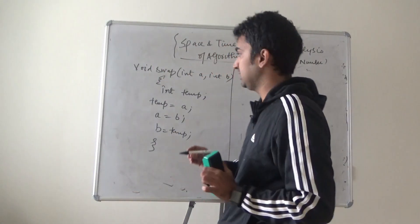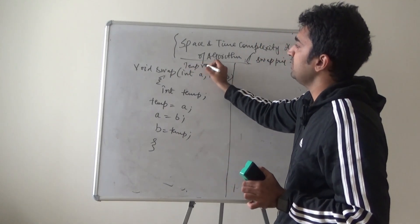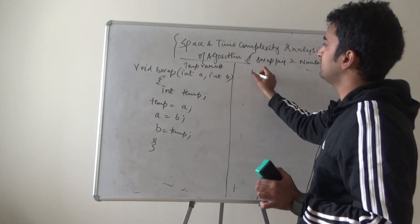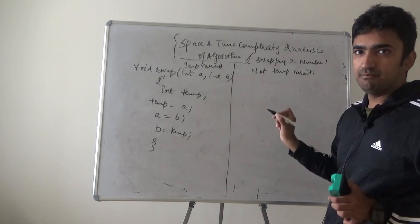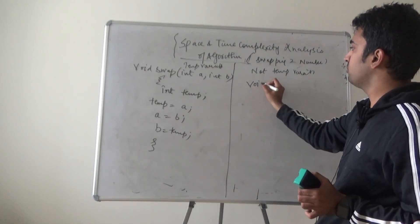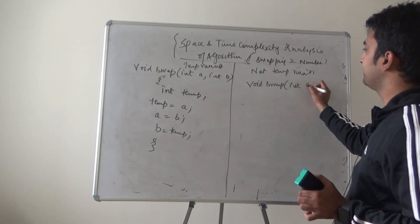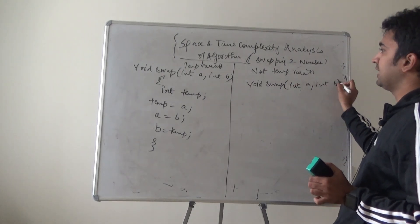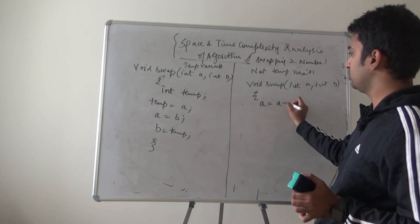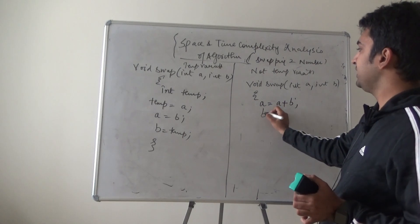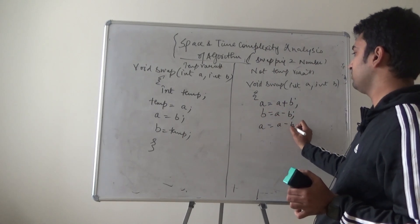Another logic of solving this is not using temporary variable. The problem will be solved in both ways by the way. I'm writing void swap and I'm writing int a and int b and we have got a is equal to a plus b, b is equal to a minus b, a is also equal to a minus b.